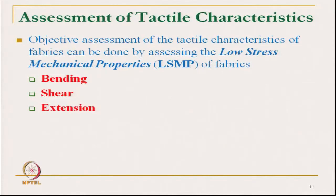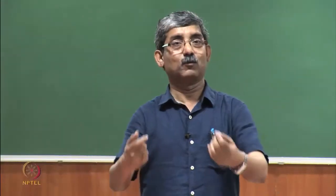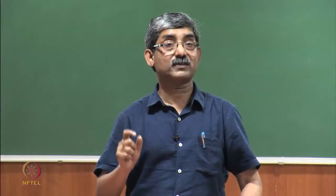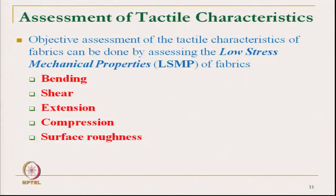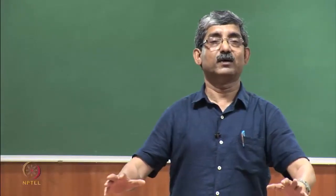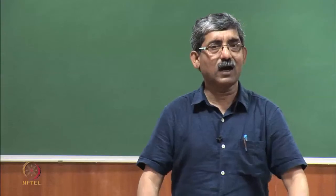Next is extensibility, which is extremely important. If the fabric has a very rigid structure at low stress, then body movement may be restricted. At low stress, extensibility should be a little bit high. Similarly, compressional characteristics — the fabric should be soft enough. Then surface roughness, which is very important as it gives an indication of scratchiness. If the surface is rough, it will generate high friction and we will feel uncomfortable. We have to measure these low stress mechanical characteristics.